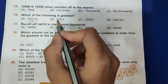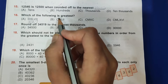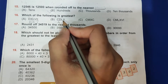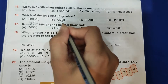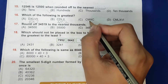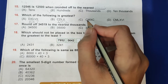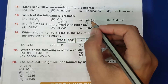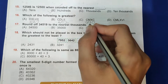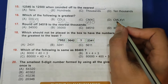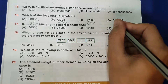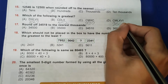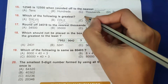Then CMXC — CM means 1000 minus 100 that is 900, XC means 100 minus 10 that is 90, giving 990. Then CMLXVI — CM is 900, LX means 60, VI means 6, giving 966. So 990 is the biggest among all the numbers. So C is the correct answer.